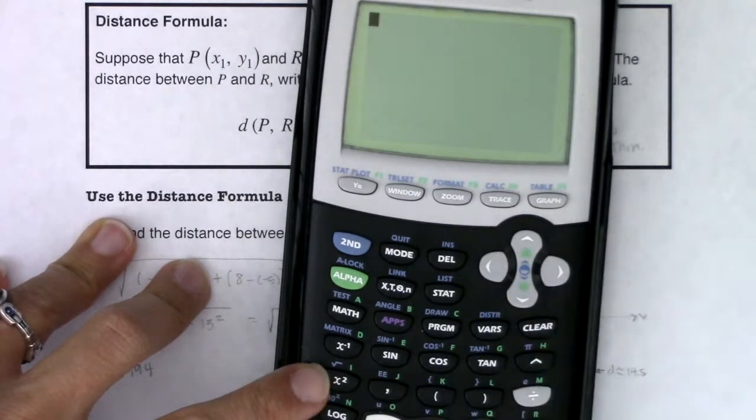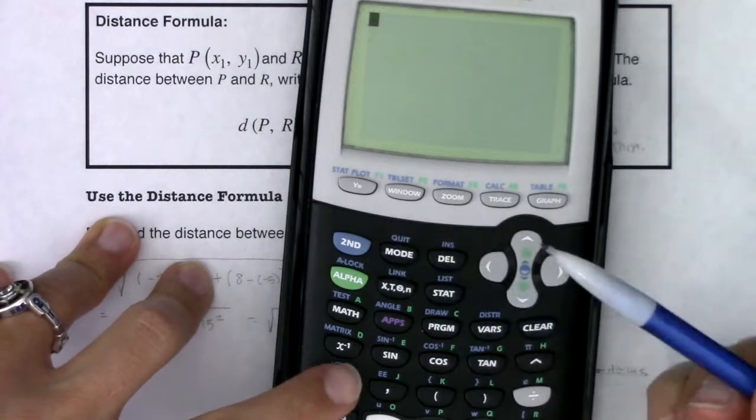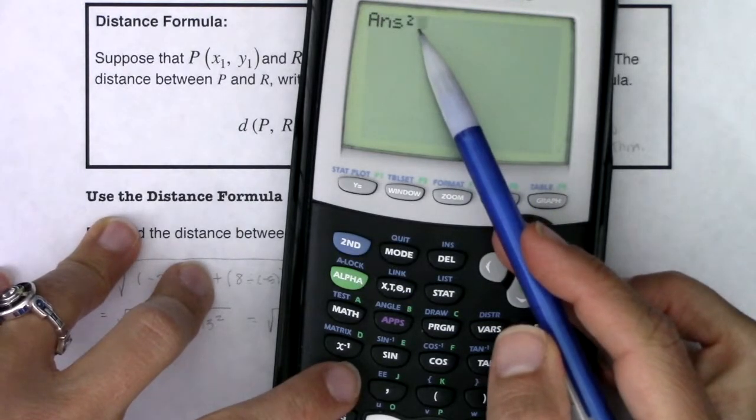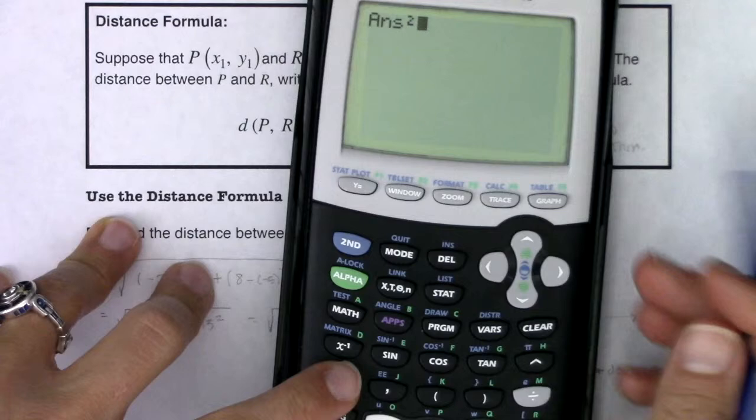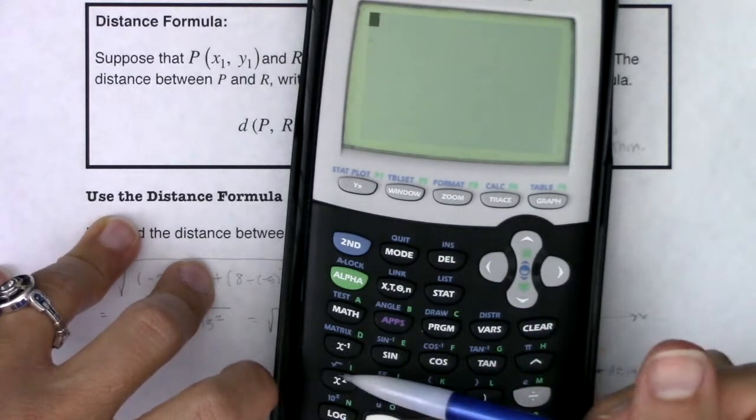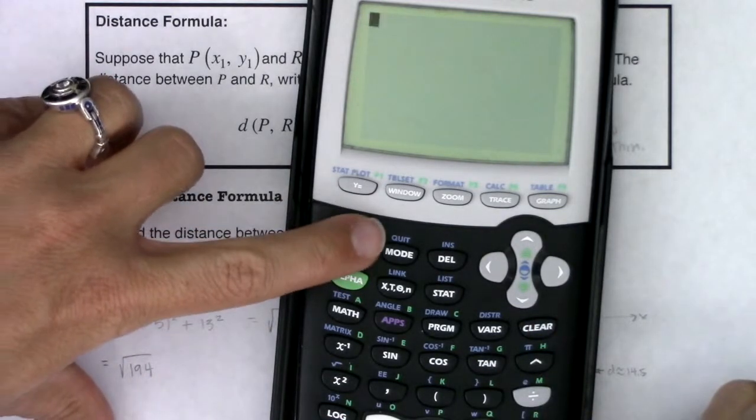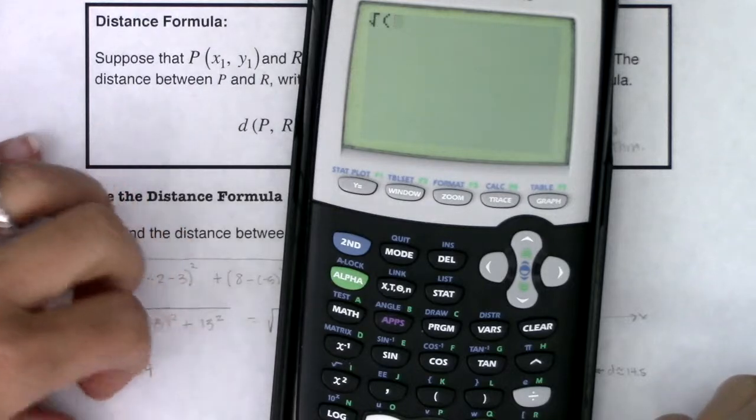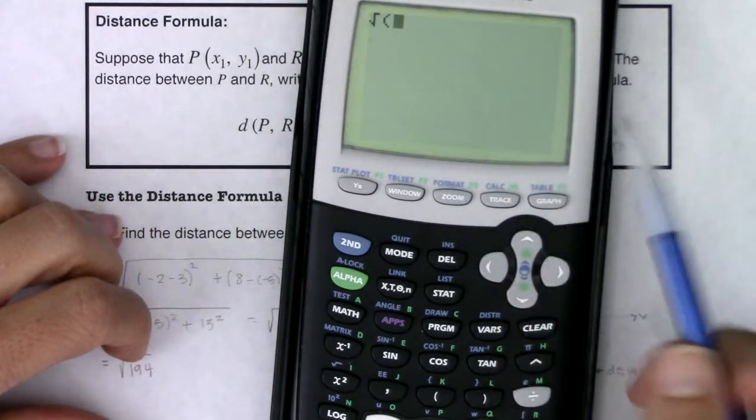So if I turn my calculator on right now and I hit x squared, you'll just see this little squared thing pop up. It's going to take my last answer and square it. If I want the square root symbol, I hit the blue button and then that button, and you'll see the square root symbol pops up.